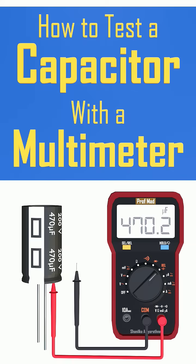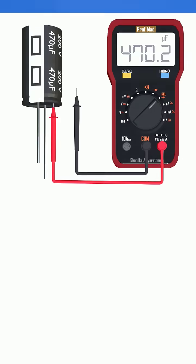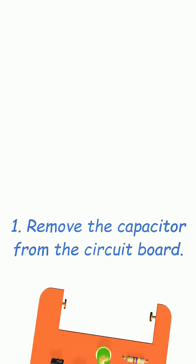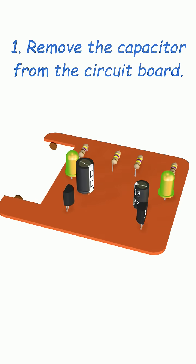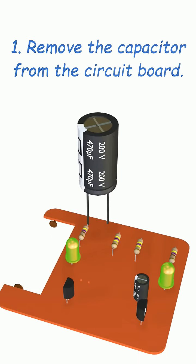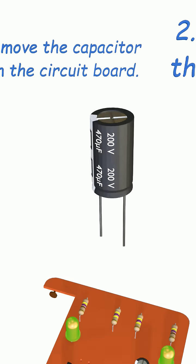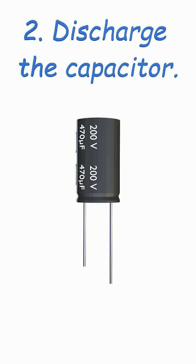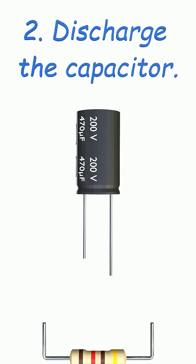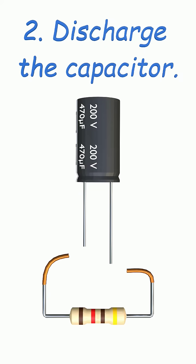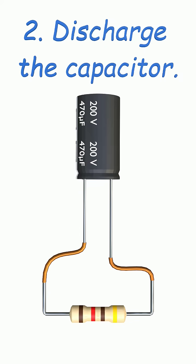How to test a capacitor with a multimeter using the capacitance mode. First, remove the capacitor to be tested from the circuit board. Then discharge the capacitor completely by connecting it across a resistor, and remove the capacitor thereafter for testing.